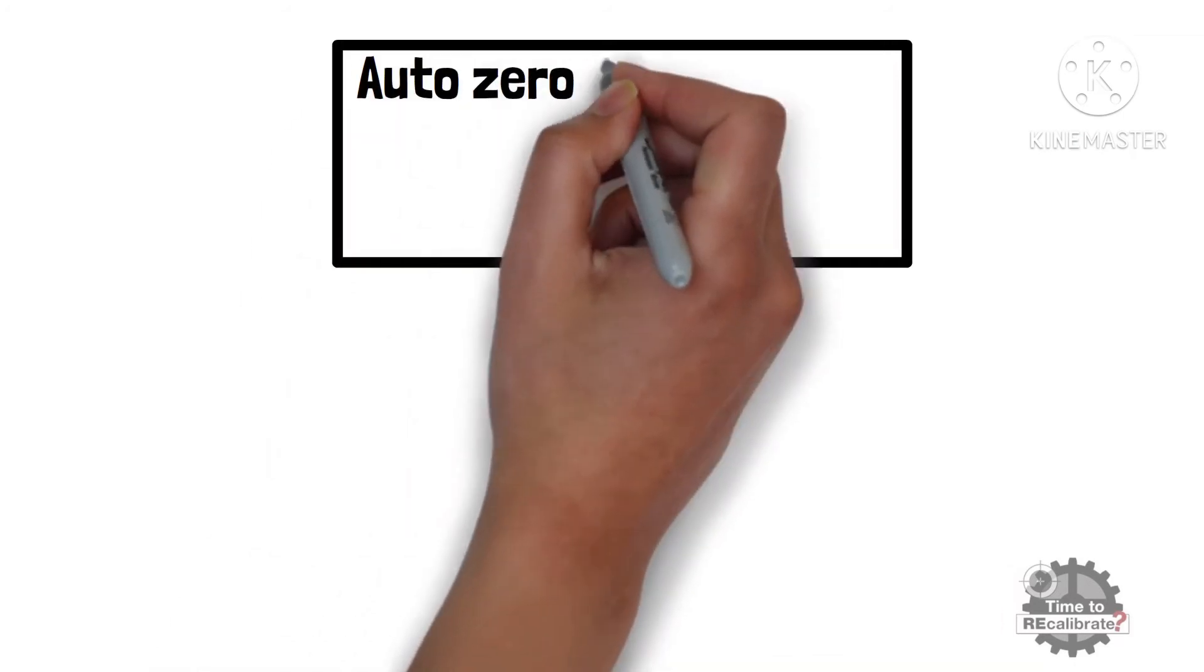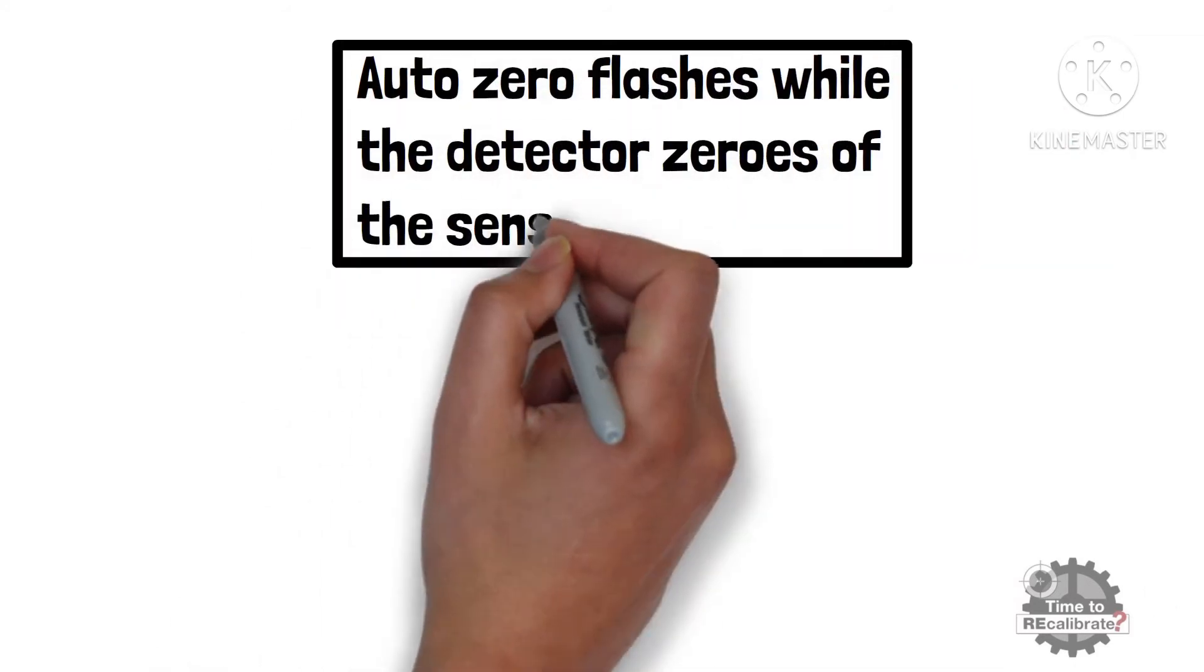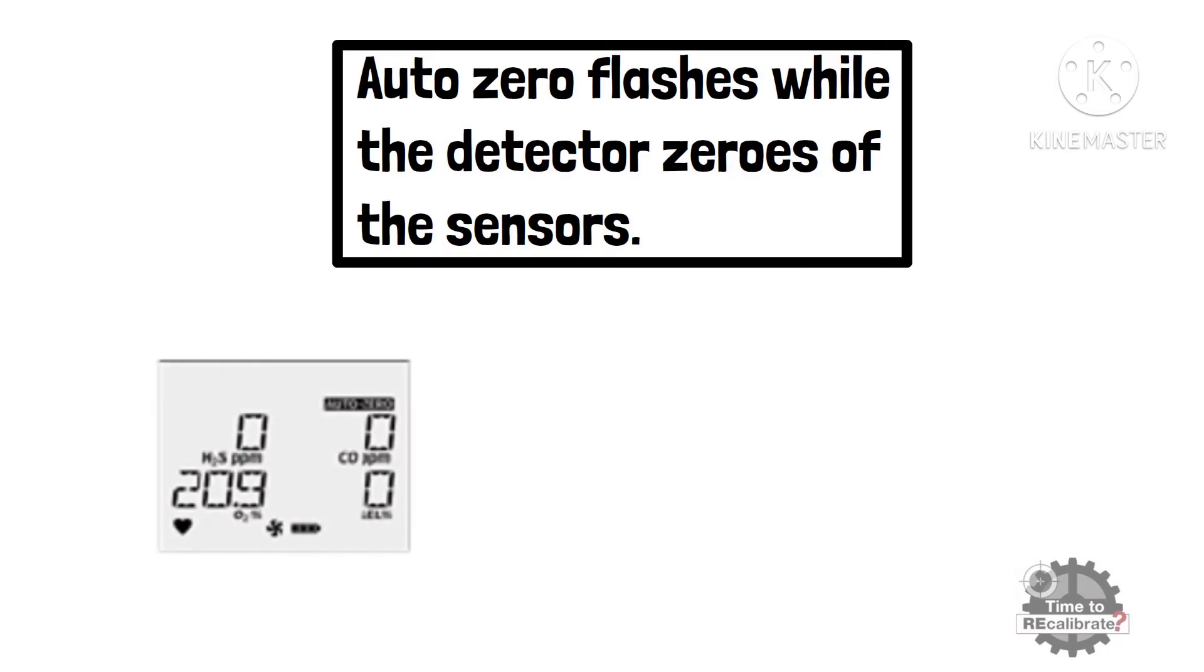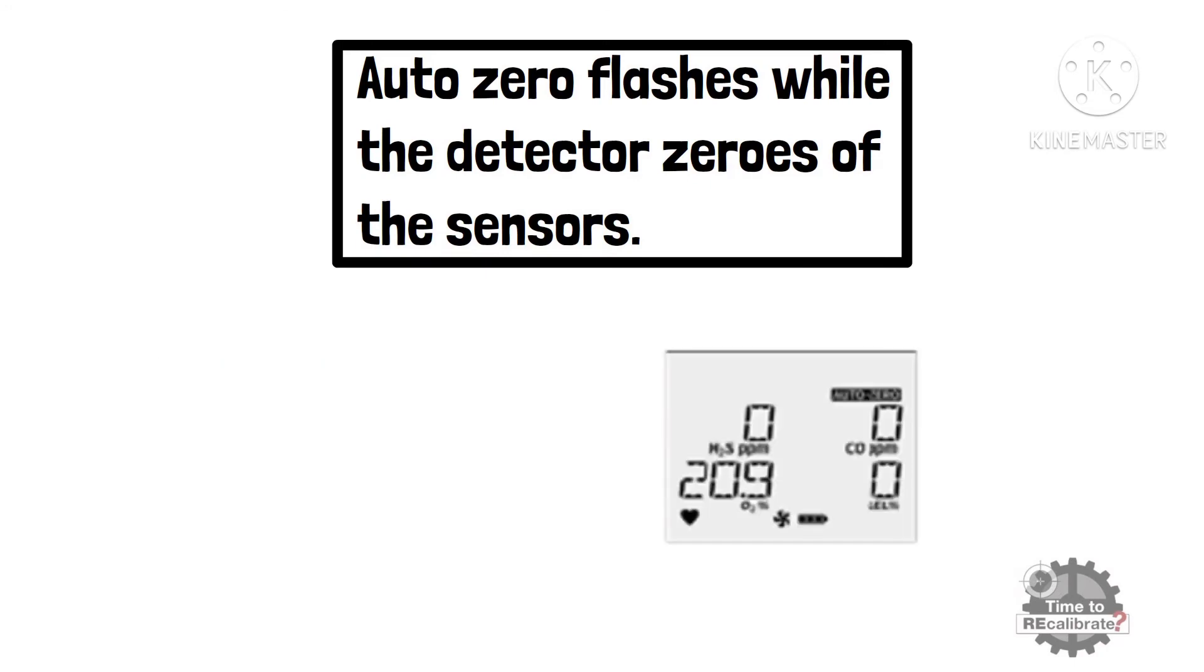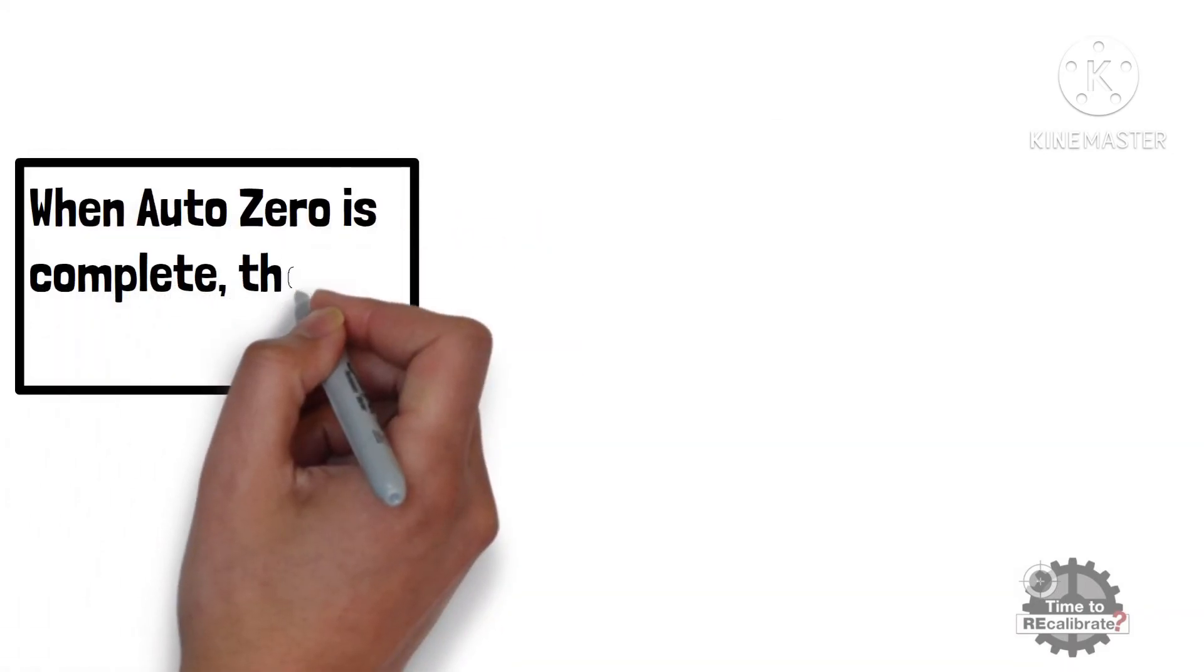Now, Auto Zero flashes on display while detector zeros all the sensors. When Auto Zero is complete, the display will show Apply Gas on the screen.